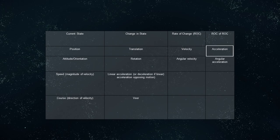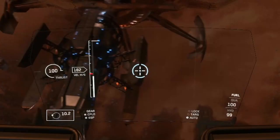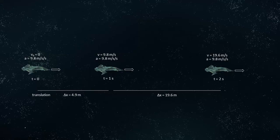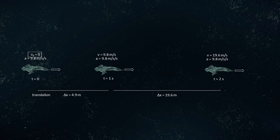Acceleration is the change in velocity, which can be a change in speed, a change in direction, or both simultaneously. The magnitude of acceleration is displayed in the HUD as multiples of g, which is the free-fall acceleration on Earth ignoring air resistance. 1g is equal to 9.8 meters per second per second, or 9.8 meters per second squared. This means that an object accelerating in a single direction at 1g from a stationary position will reach a speed of 9.8 meters per second after the first second, and 19.6 meters per second after the next second.